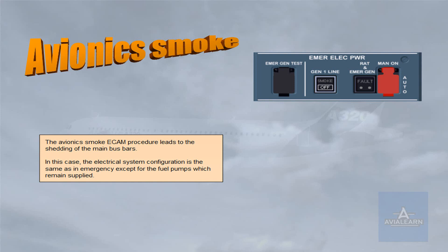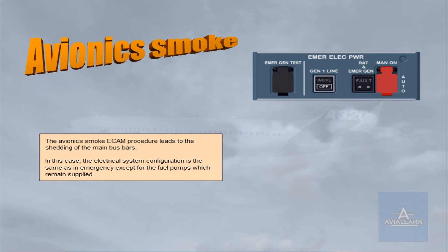In this case, the electrical system configuration is the same as in emergency, except for the fuel pumps which remain supplied.